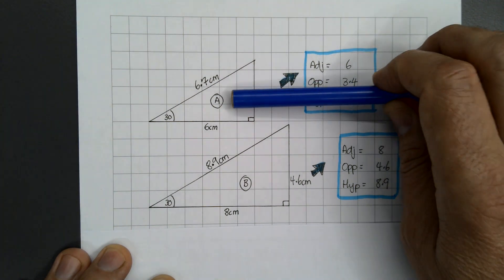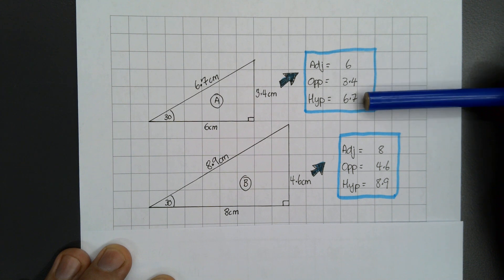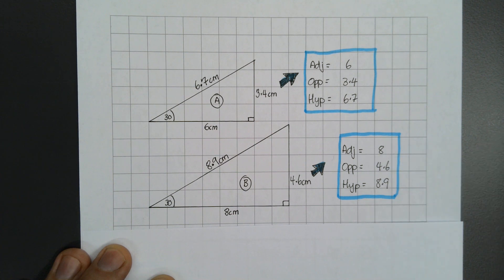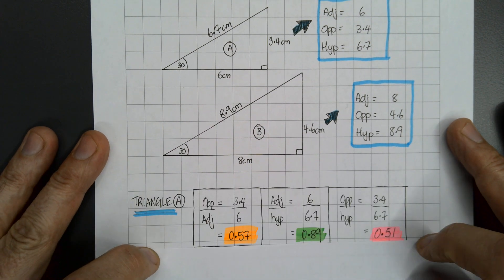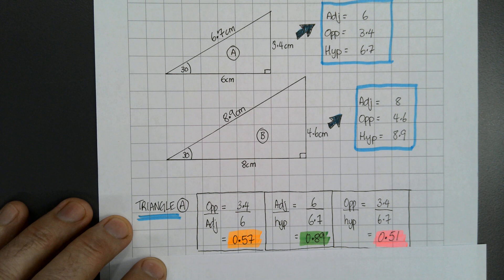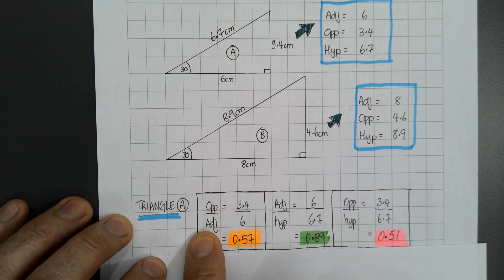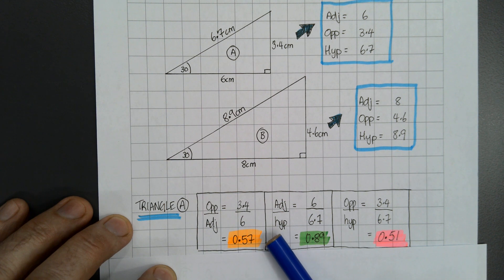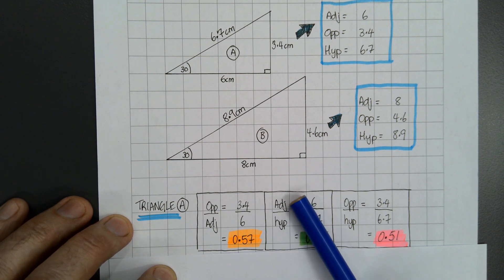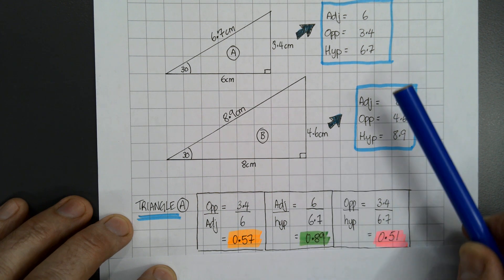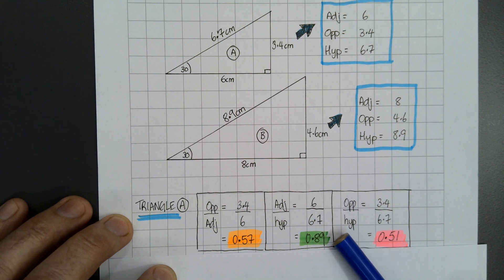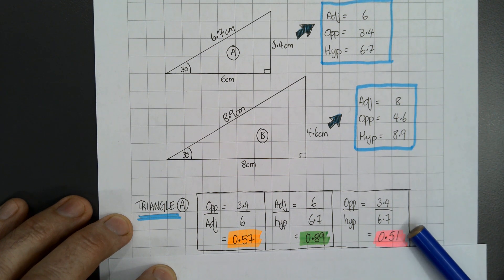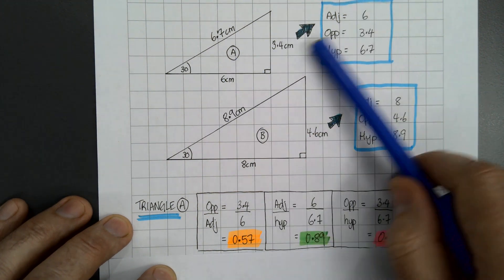I've got triangle A: adjacent is 6, opposite is 3.4, hypotenuse is 6.7. Similar for B, there's the adjacent, opposite, and hypotenuse. Now let's say we get triangle A and I'm going to get the opposite and divide it by the adjacent. So opposite over adjacent, I've got 3.4 over 6. I grab the calculator and do that, and I get 0.57. I do the same for the adjacent and hypotenuse - I get those measurements, divide them, and get 0.89. Same here for opposite and hypotenuse - those two there, divide them, and I get 0.51. That's just for triangle A.